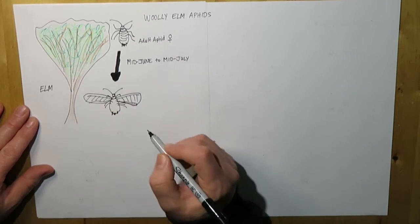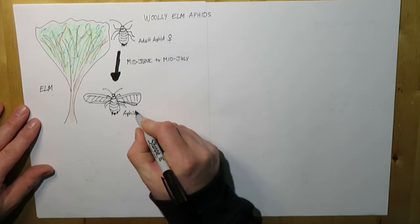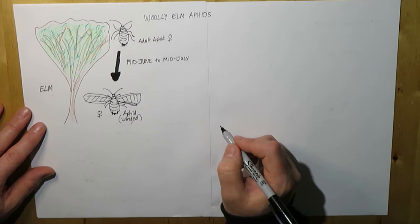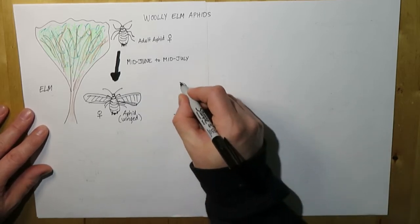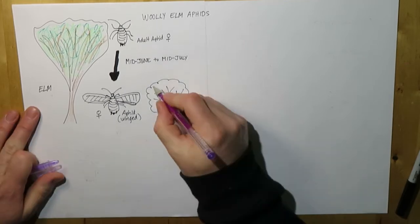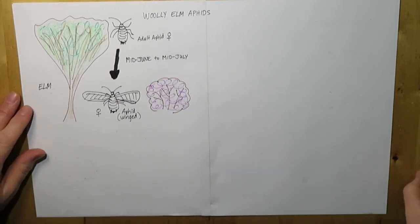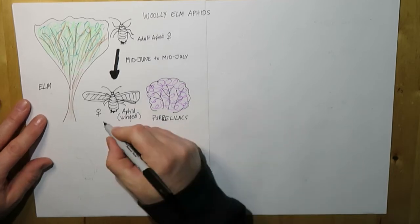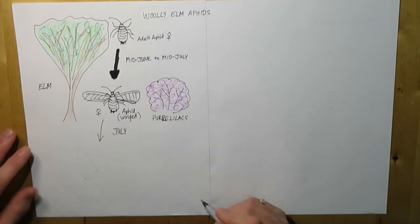Also still female. And then at that point, the winged females will now move over, fly over to the saskatoon berries. And this happens about the time in the year when you see the purple lilacs are blooming. So that's usually a clue that something is going on as these winged aphids are starting to move.